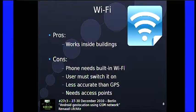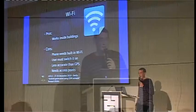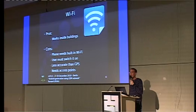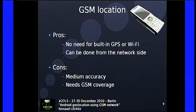Another way to geolocate yourself is to use Wi-Fi. Wi-Fi works inside buildings, so you can locate yourself at work or at home. But you need Wi-Fi on your phone, you need to switch it on, and it's far less accurate than GPS — the coverage for a Wi-Fi access point is about 300 meters. You also need access points nearby to triangulate your position.